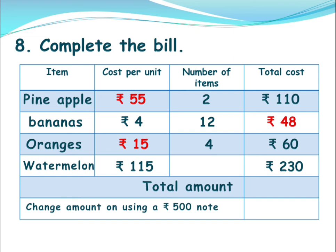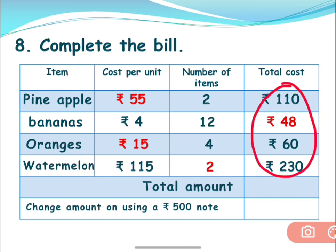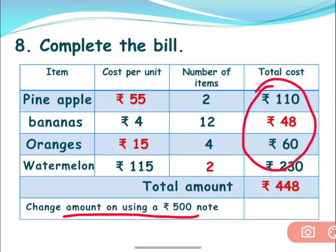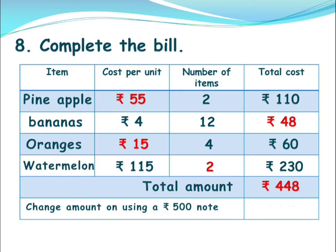Next, for watermelon, the cost of one watermelon is 115 rupees and they paid 230 rupees in total. So you need to calculate the number of units: 230 divided by 115, which gives you 2. That means they took 2 watermelons. Now the total amount — adding all items — is 448 rupees. If the customer paid with a 500 rupee note, the change they will get back is 52 rupees.